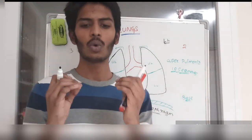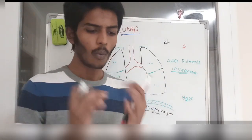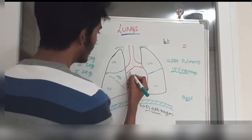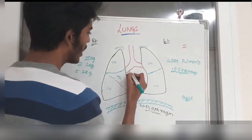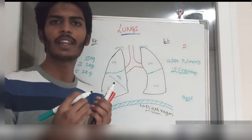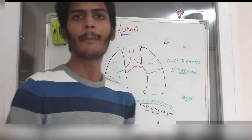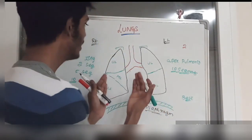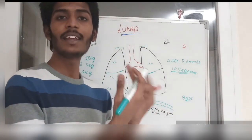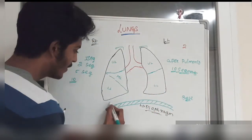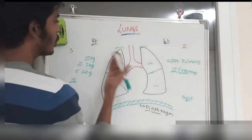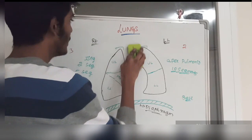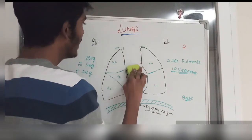Now we'll discuss the root of the lung. The root of the lung is the place where the bronchi, along with blood vessels — including the pulmonary artery and pulmonary veins — enter the lung. The lung has multiple surfaces: one inferior surface facing the diaphragm, and one facing the ribs.